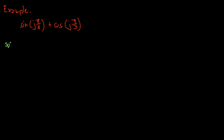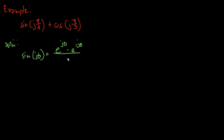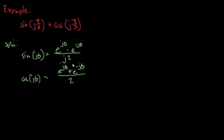First, we will have our solution. We will list the identities here. So our sine(jθ) is equal to e^(jθ) minus e^(-jθ) over j2. That will be our first identity. Then for cosine(jθ), this is equal to e^(jθ) plus e^(-jθ) over 2. We just need to inject these identities into our given equation.